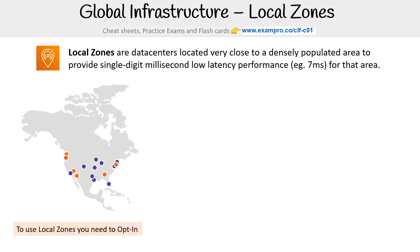Here is a map of local zones that exist and ones that are coming out — the orange ones are probably ones that are on their way. To use a local zone, you do need to opt in, so you have to go to AWS, probably open a support ticket, to get access to it.